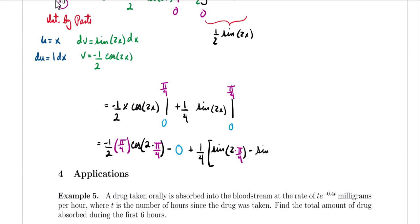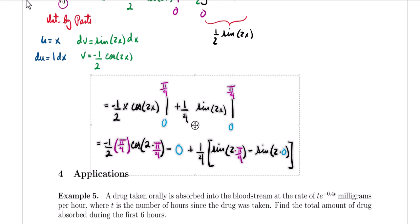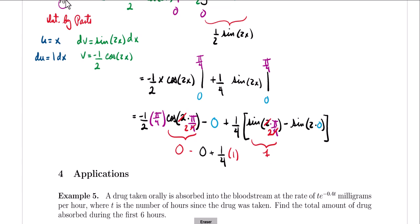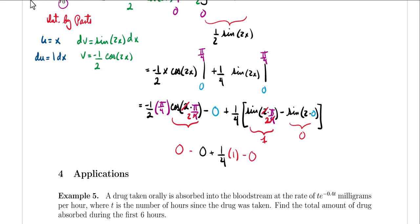Minus sine of 2 times zero. On the first term, cosine of 2π/4 simplifies to cosine of π/2, which is zero. So we're getting zero minus zero. Plus 1/4 — the sine of 2π/4 simplifies to sine of π/2, and sine of π/2 is simply 1. So we're multiplying 1/4 times 1, minus the sine of zero, which is also zero.